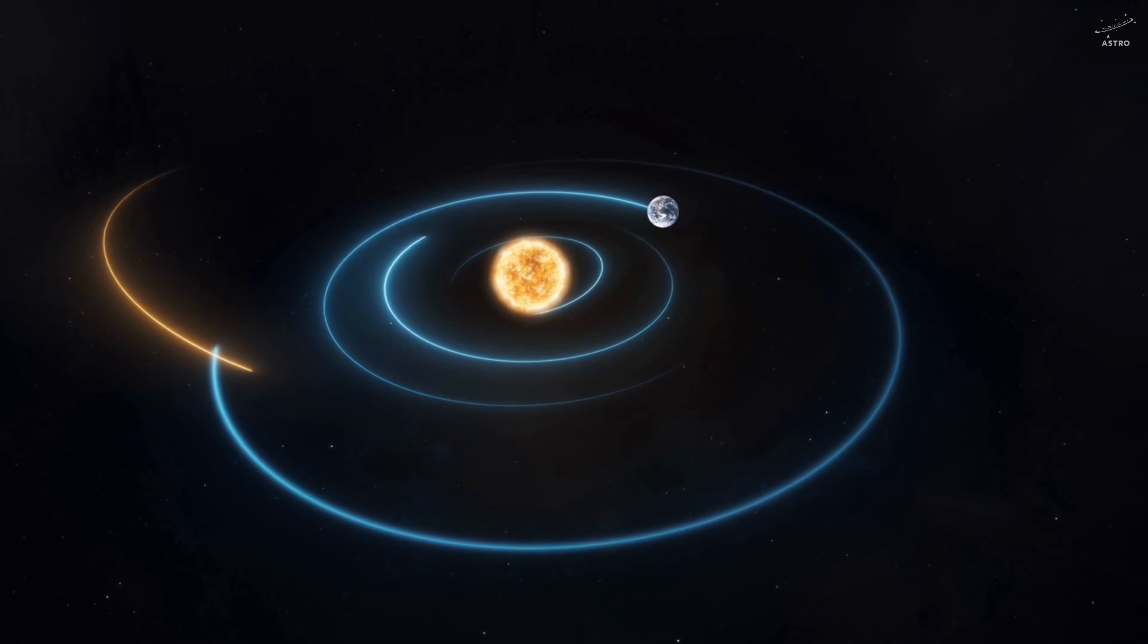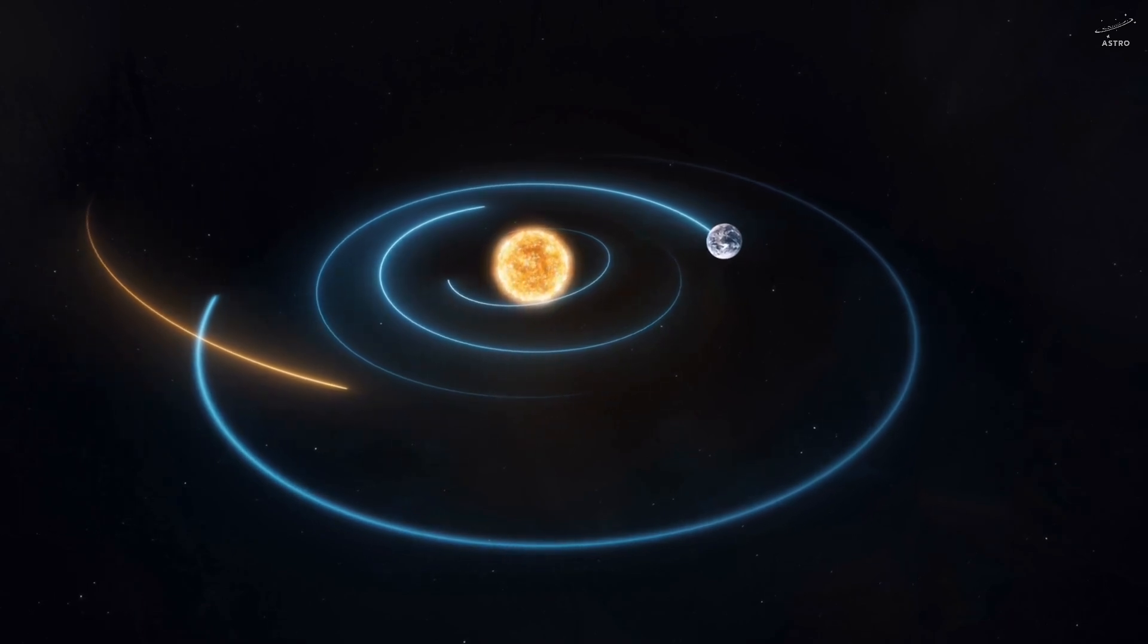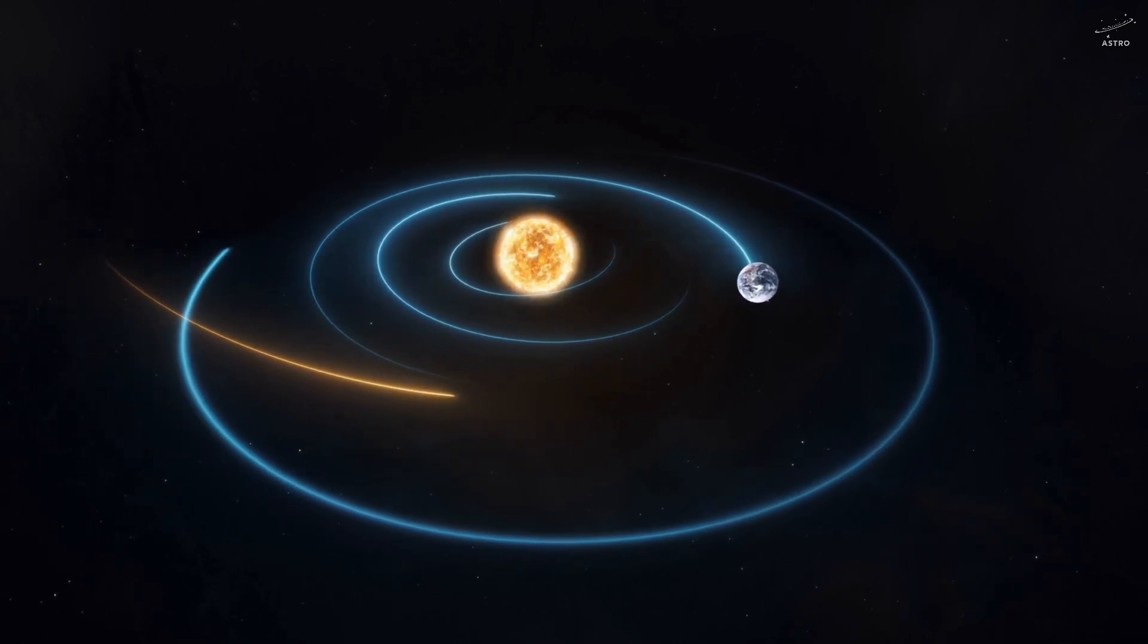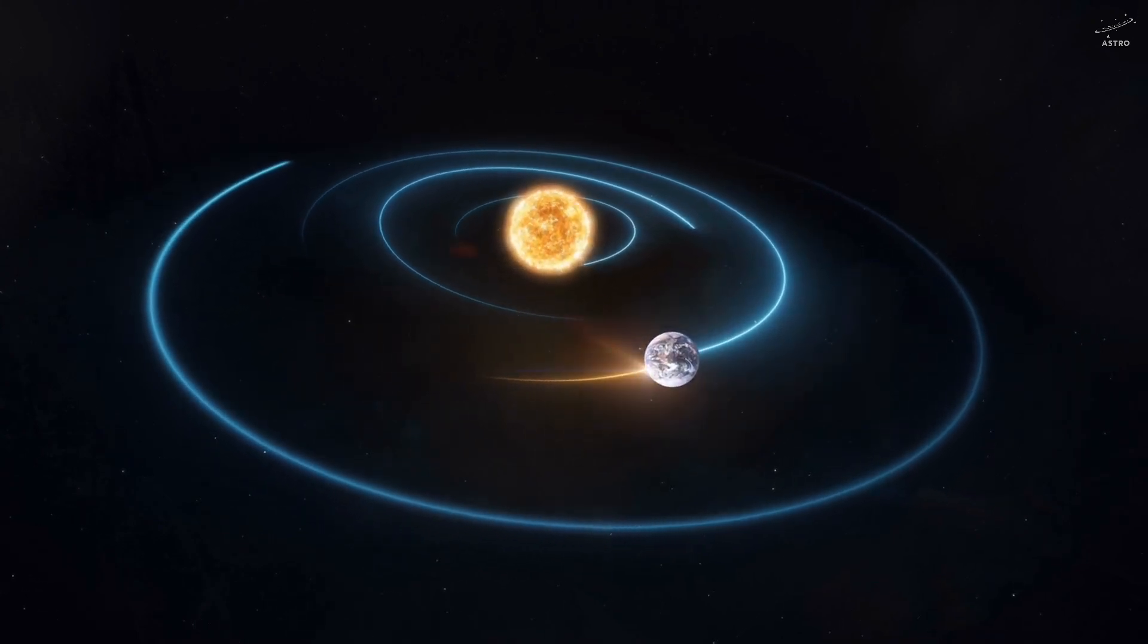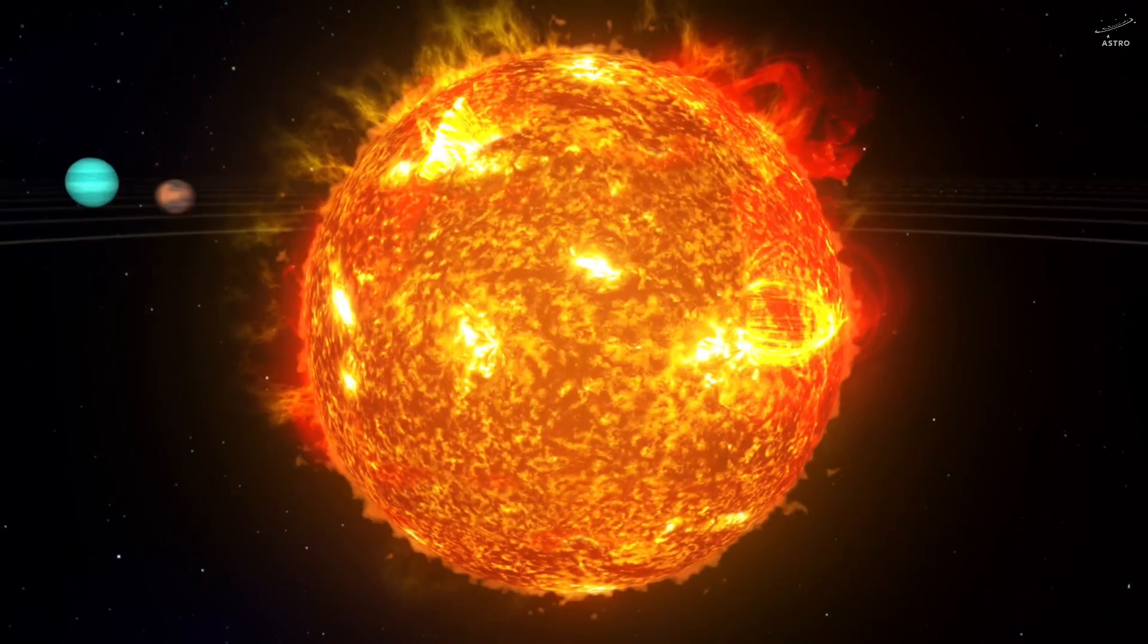That's Earth. A cosmic dancer, orbiting the solar flame. Not because it's chained there, but because it's always outrunning its fall, at just the right speed. But now, here's the real question.